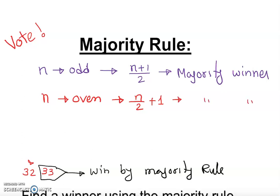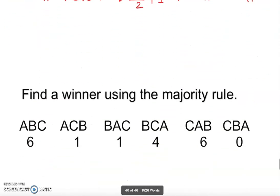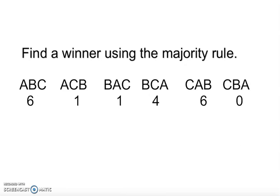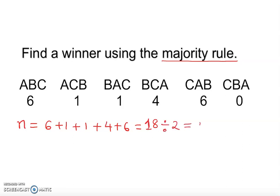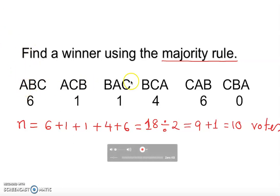Let's look at an example. We need to find a winner using majority rule. The rule is: more than 50%. First we find the total number of votes. N equals 6 + 1 + 1 + 4 + 6, which gives us 18. Since 18 is even, I divide by two to get 9 votes — that's 50% — and then add one, so we are looking for 10 votes to have a majority winner.